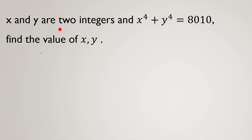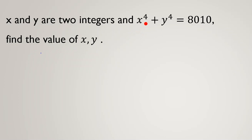x and y are two integers and x to the 4 plus y to the 4 equals 8010. Find the values of x and y. For solving this problem I should tell you an important rule for the fourth power, and after that we can solve this problem easily.